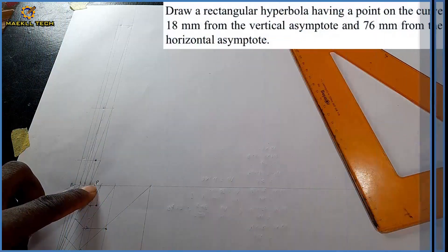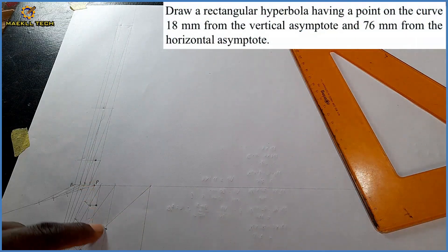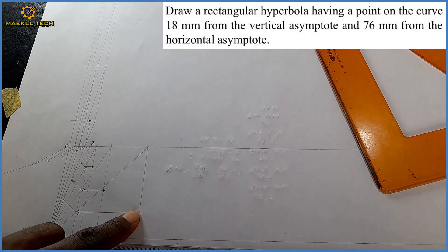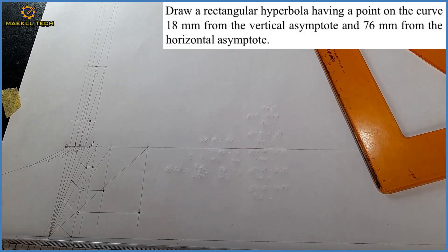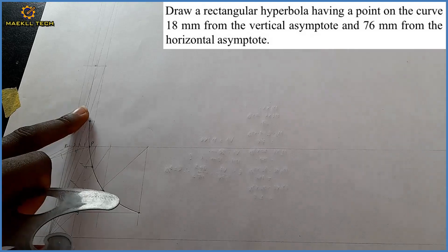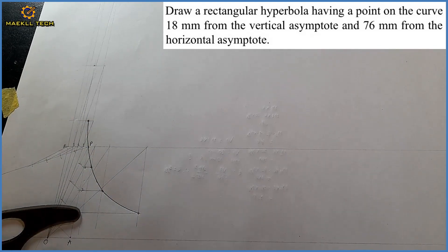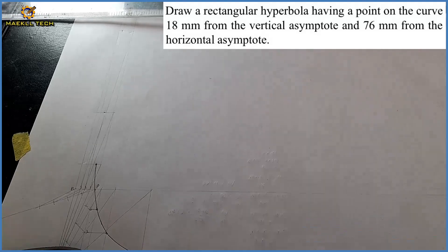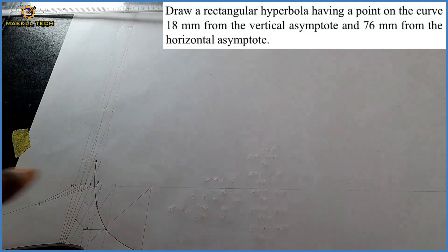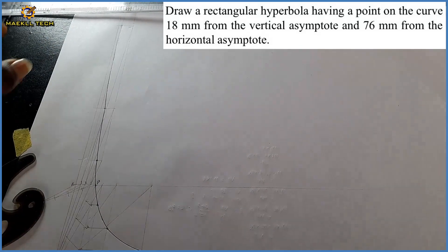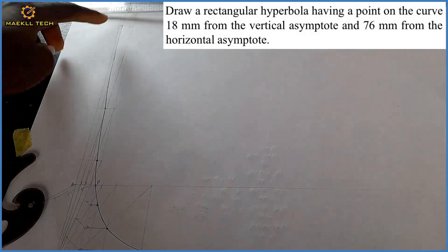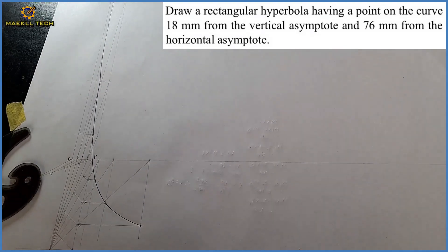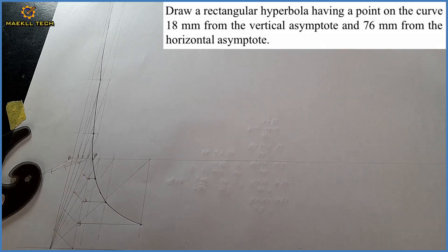The next procedure is to pick your regular curve and join each of those points, passing through point P. The curve must pass through point P on its way down to the bottom. I've joined the bottom part. Now for the upper part — from the top down — that is the complete curve, from the top down to the bottom.